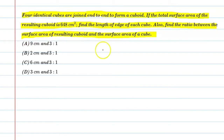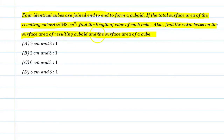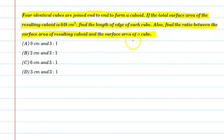So students, basically in this question we have 4 identical cubes joined end-to-end to form a cuboid shape. The total surface area of the resulting cuboid is 648 cm². We need to find the side (length of edge) of each cube, and also find the ratio of the surface area of the resulting cuboid to the surface area of a cube.